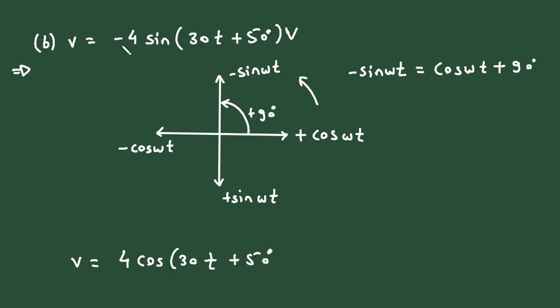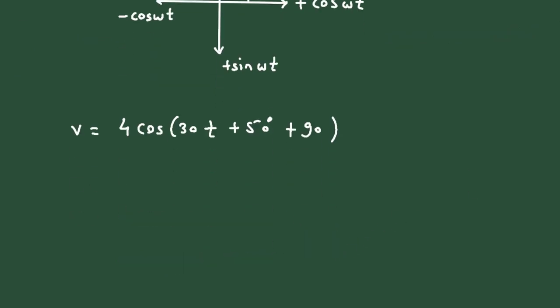Now here what we have to do? We have to add 90 degrees to it, because we changed this from minus sine to plus cosine. So this will be now v is equal to 4 cos(30t + 140°).